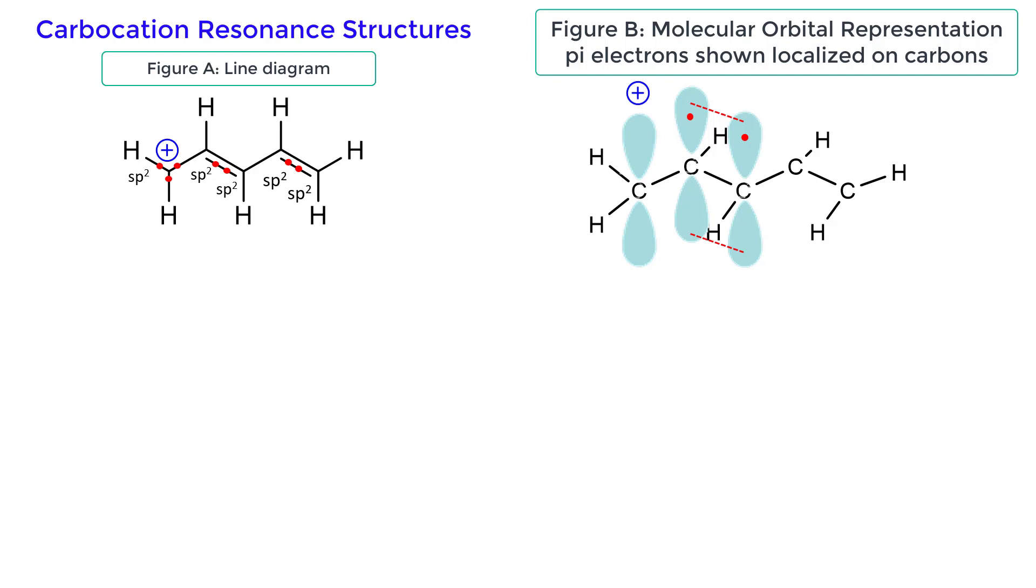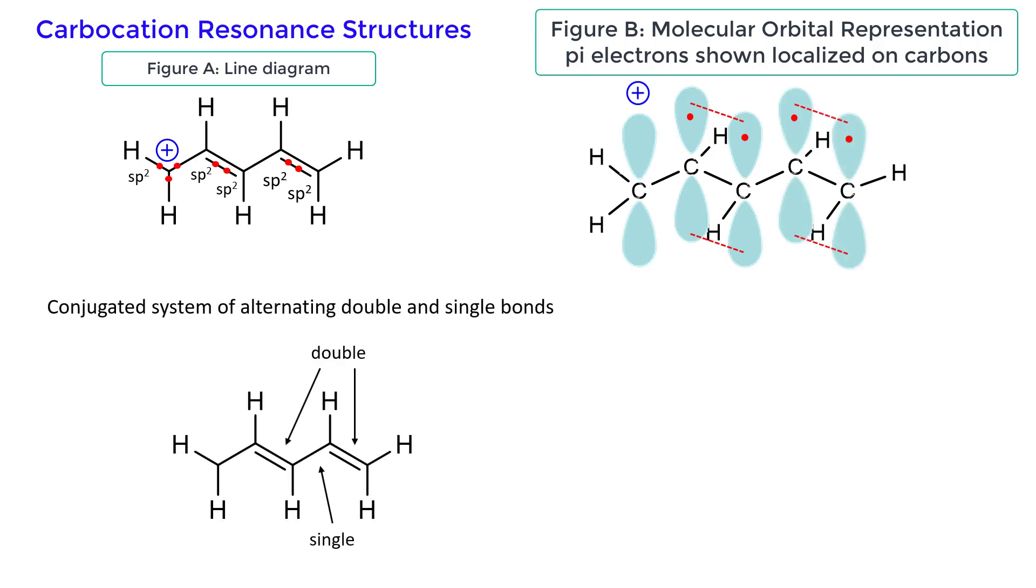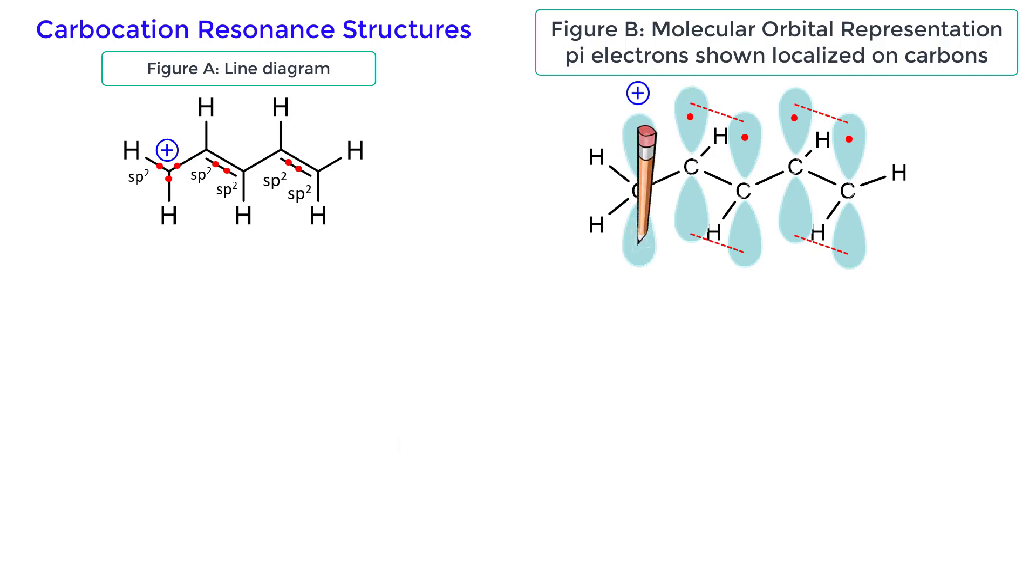The pi bond is adjacent to another pi bond, which creates a conjugated system of alternating double and single bonds. In figure B, you can see how the carbocation's p orbital is aligned with the adjacent pi bond. This allows for the delocalization of the electrons through the overlapping pi system.